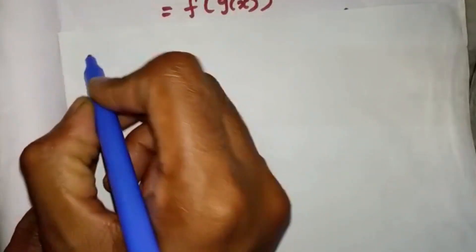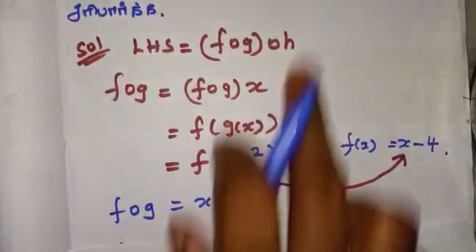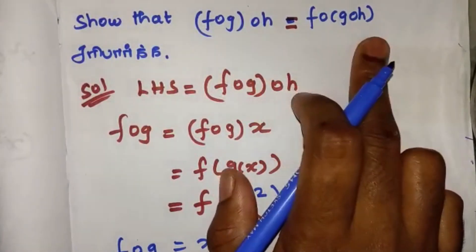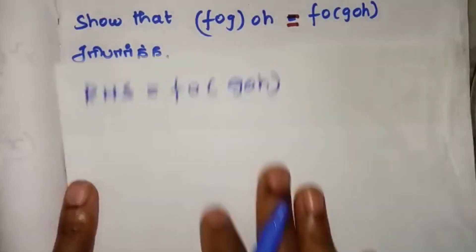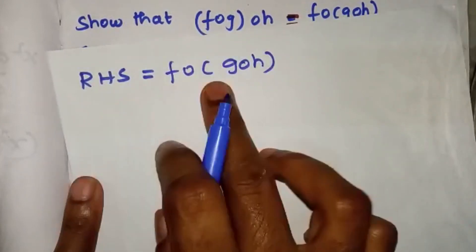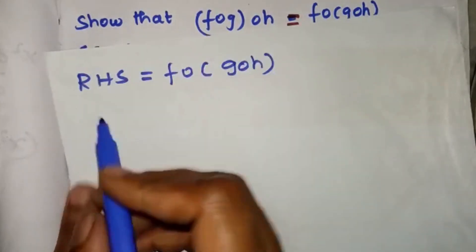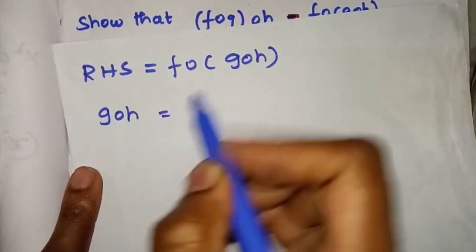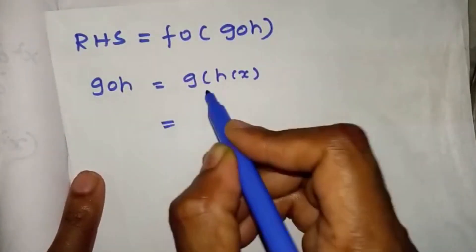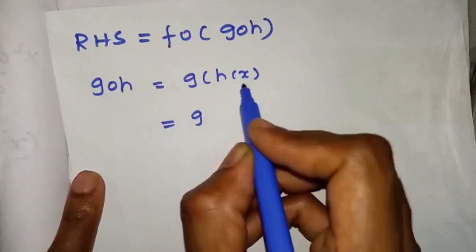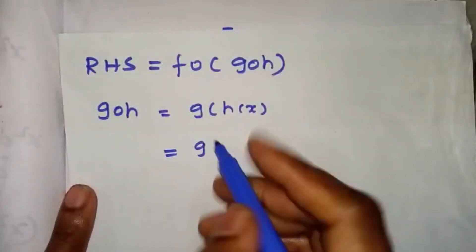Right hand side, f of g of h. First term g. h of function is h of x, 3x minus 5.